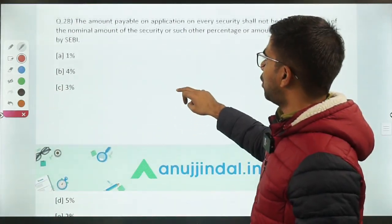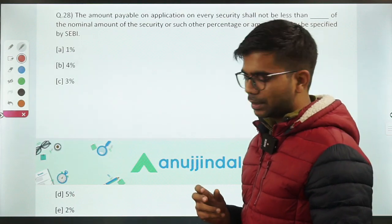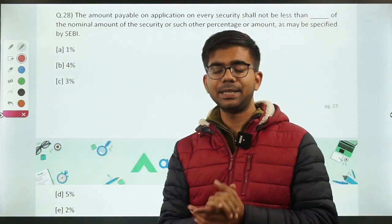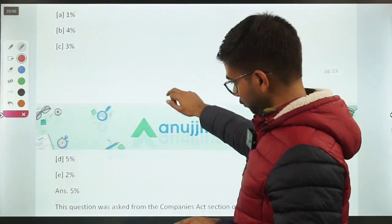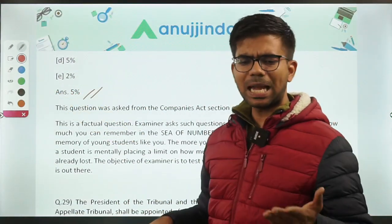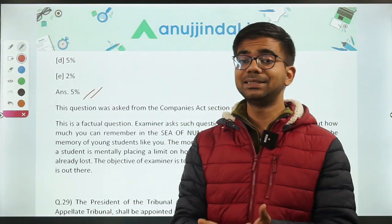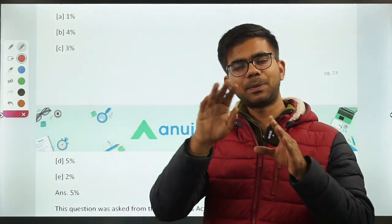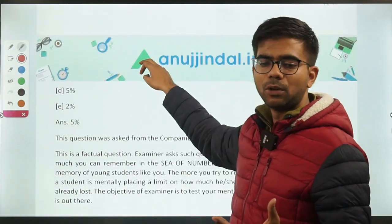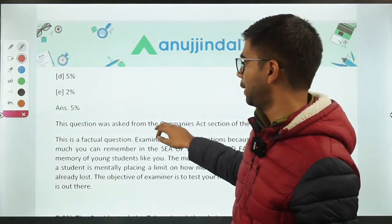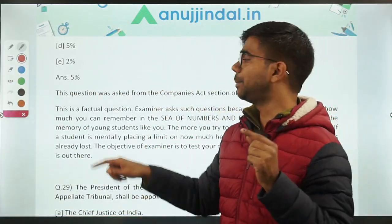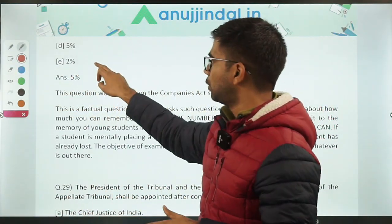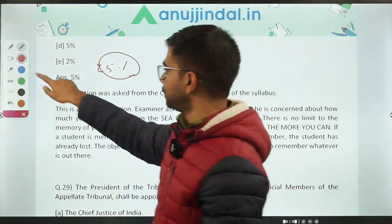Question 28: the amount payable on application — a Companies Act question about minimum application money. If anybody wants to apply in any IPO or FPO, as per Companies Act there is a minimum application requirement. This is a factual question — the concept is straightforward. Note that SEBI regulations can override Companies Act provisions on this matter.